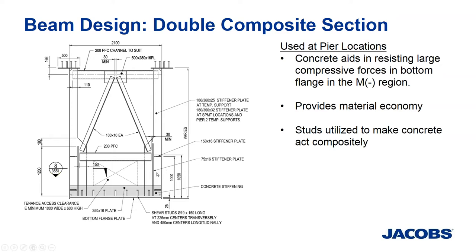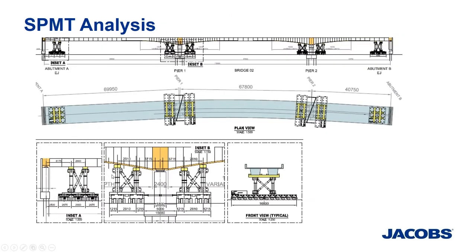The SPMT bridge move was performed by Sarens. Several SPMTs were located along the bridge for pickup — two supports at each pier (one on each side) and one at each abutment — and they had to squeeze in between the temporary supports. The bridge was brought parallel to its final configuration, then they swung the south end first to clear the substructure of bridge number three, then maneuvered the north end by rotating into position. The bridge move had a 54-hour time window starting Friday night, needing completion by Monday morning.